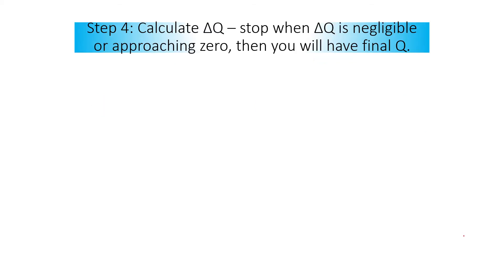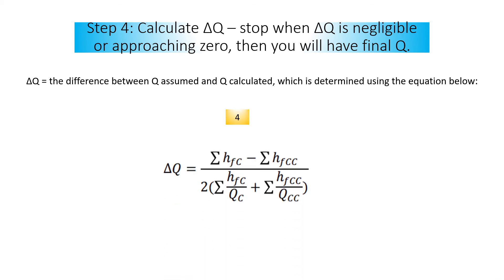Step four, finally you want to calculate delta q. Delta q is the difference between q assumed and q calculated which is determined using the equation below. This is where the iteration methods will be applied. The fourth equation will be delta q.